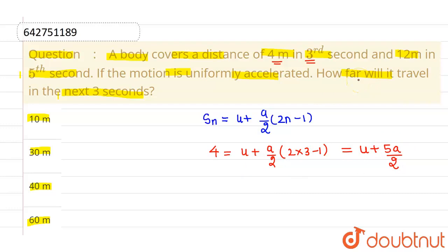Similarly, in the 5th second, the displacement traveled is 12 meter. So I can write 12 equals to u plus a by 2 into 2 into 5 minus 1. This will come out to be u plus 9a by 2.